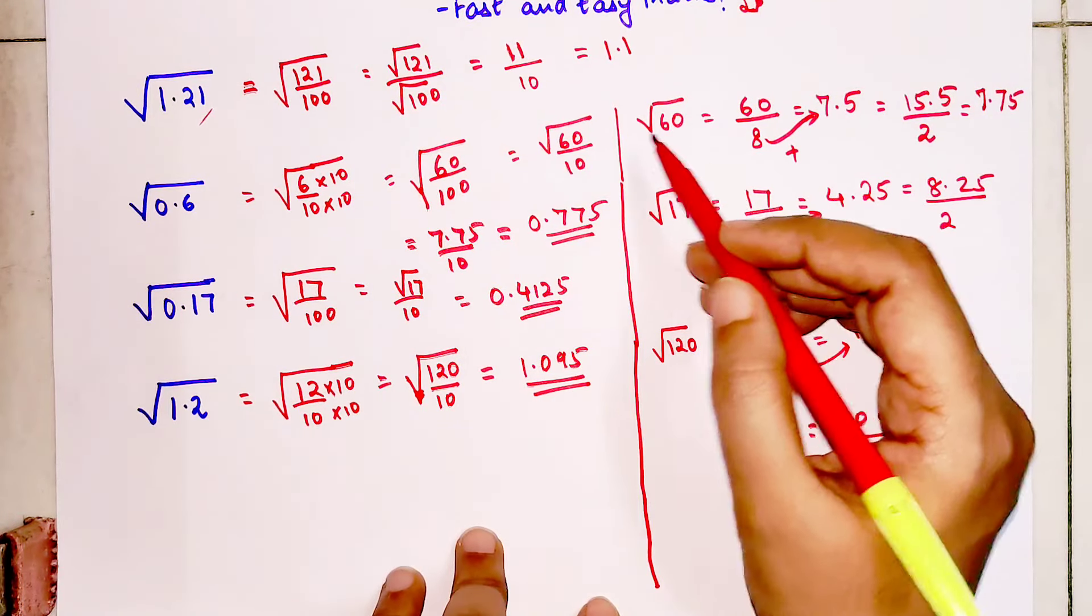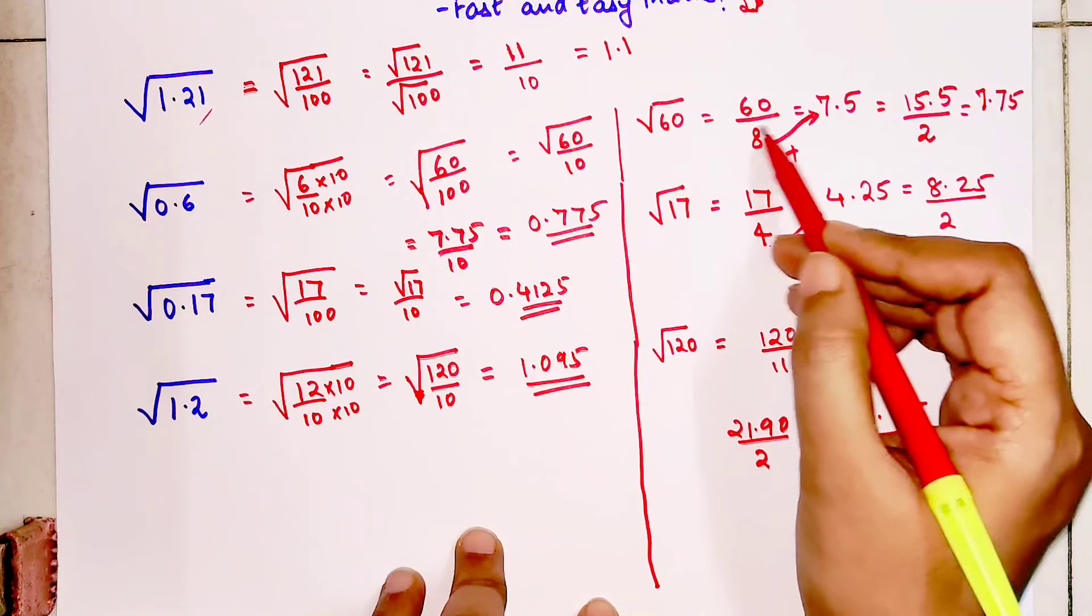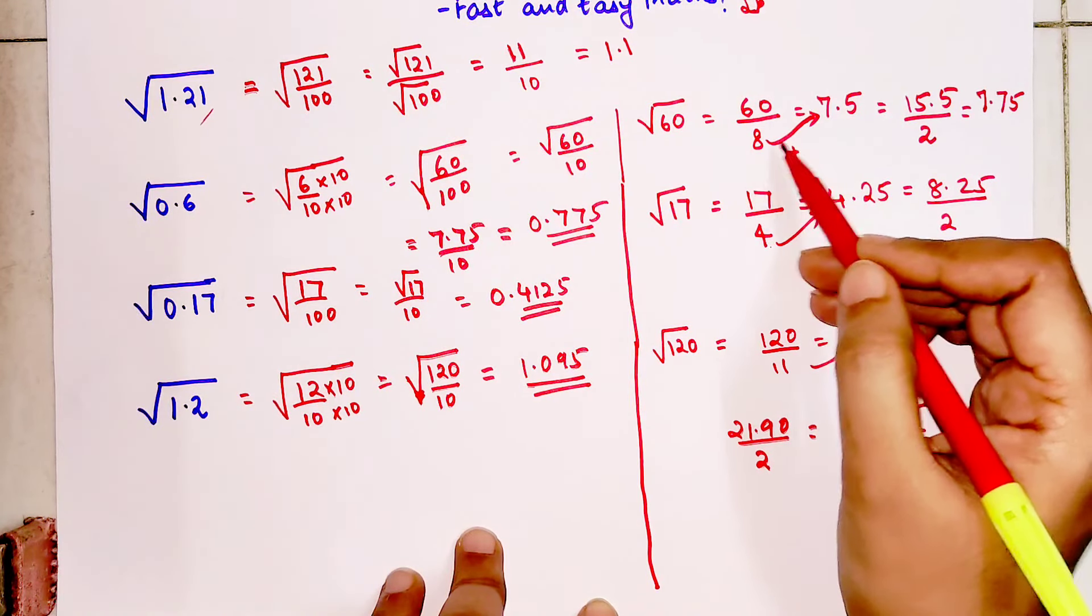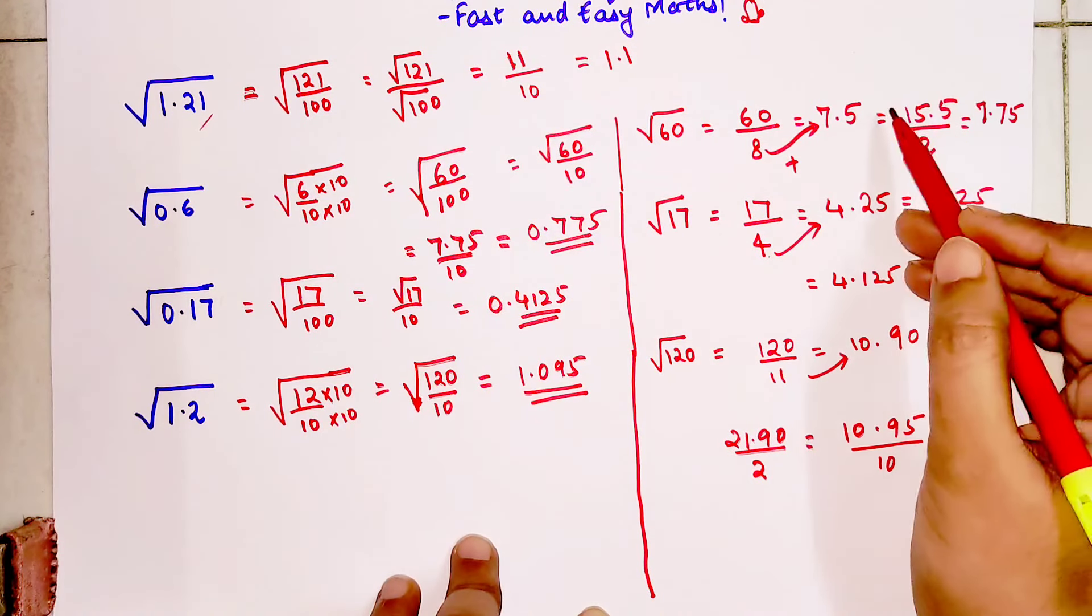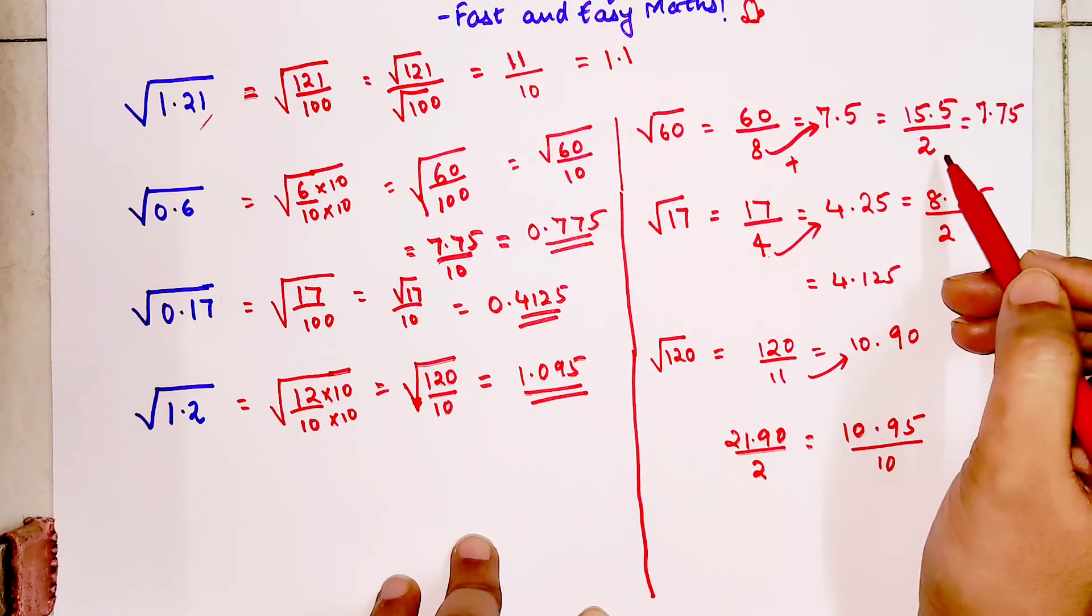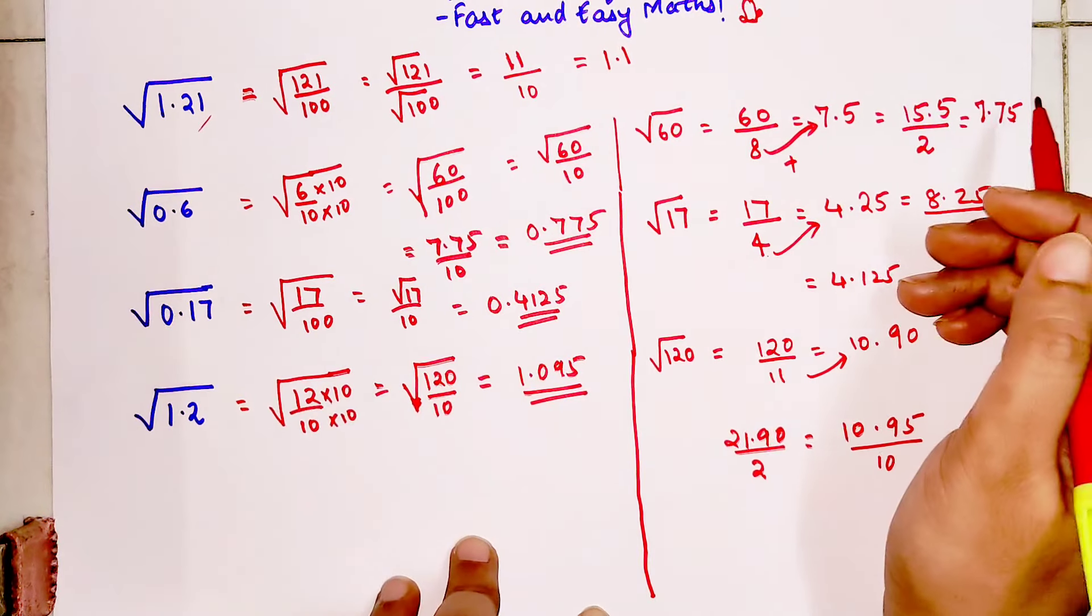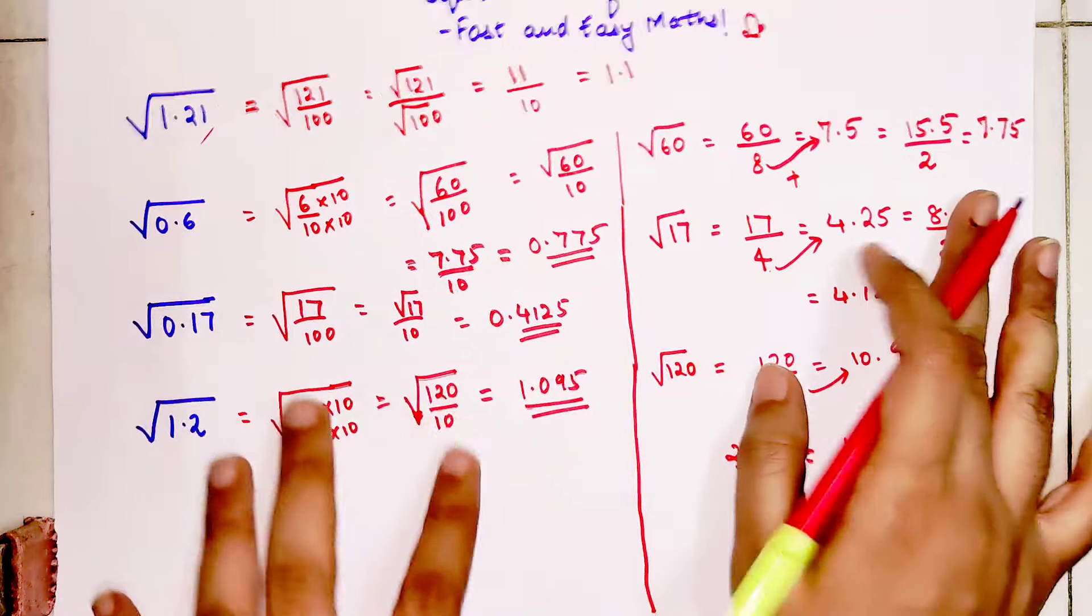And then this is the practice which you'll follow if it's an imperfect square. So if it's an imperfect square, you will divide it by the closest number. So whatever answer you get, you will add with the closest number square, and then this answer will get divided by 2. And to get the final answer, you will divide this final answer by 10. So I hope you're getting the hang of it.